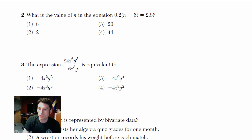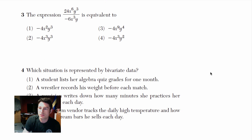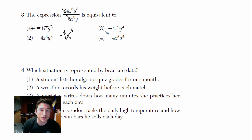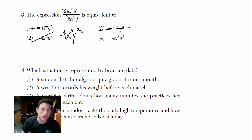Number 3 involves an expression — you should know your exponent rules. Look at it in pieces: 24 divided by negative 6 is negative 4. For x to the 6th over x to the 3rd, you subtract exponents — same base, subtract — so that's x to the 3rd. Then y to the 3rd over y to the 1st: 3 minus 1 is 2, so y squared. That leaves us with choice 4.